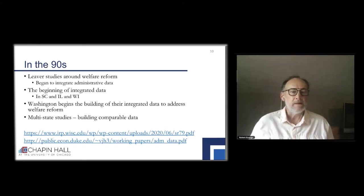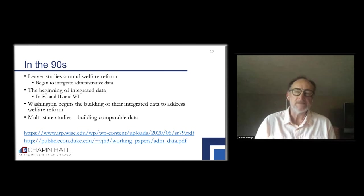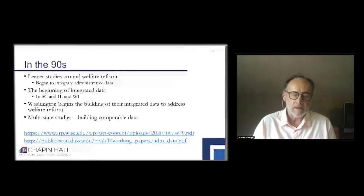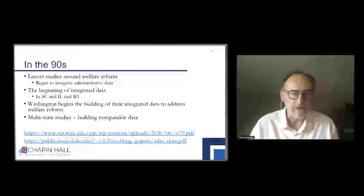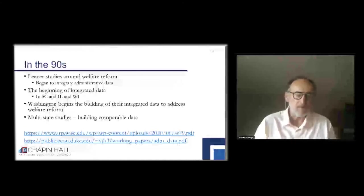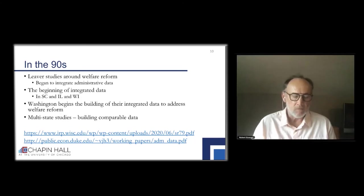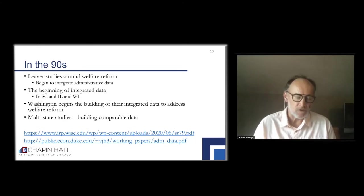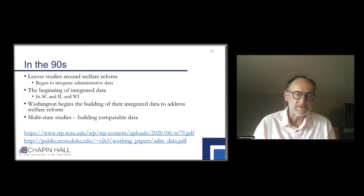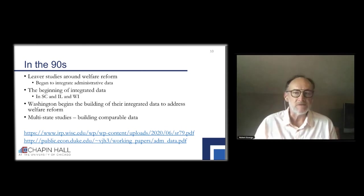In the 90s, we began to see leaver studies around welfare reform. This was a way to begin to integrate administrative data — linking it to survey data. We saw the beginning of integrated data in South Carolina, in Illinois, and Wisconsin. Washington State began building their integrated data to address welfare reform in the 90s. And we started to do multi-state studies, building comparable data across states so we could compare what was happening to individuals and families across states.